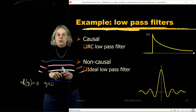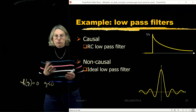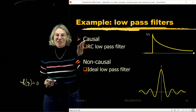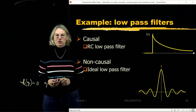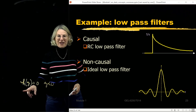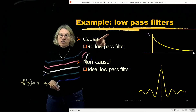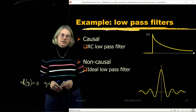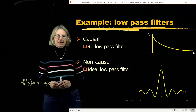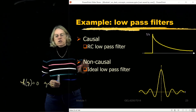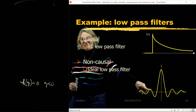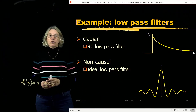Going back to our two low-pass filter impulse responses: the RC low-pass filter is causal because it's a one-sided decaying exponential — it respects the property of being zero for negative t. The sinc function for the ideal low-pass filter is clearly non-causal because it is not zero before the origin.